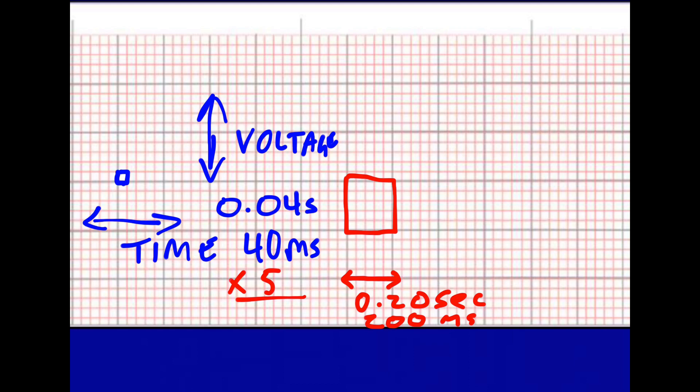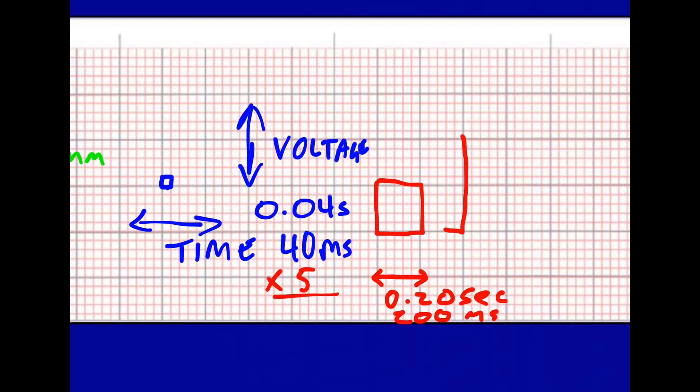When it comes to voltage, 10 small boxes or two large boxes in height equals one millivolt. So every small box would be 0.1 millivolt.